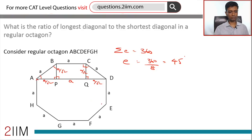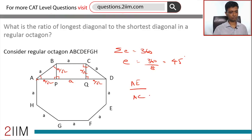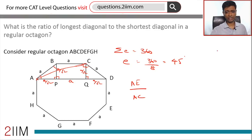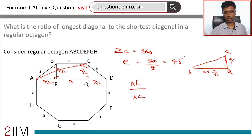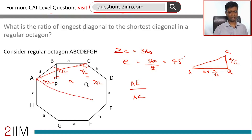The longest diagonal goes from A to E — the fourth vertex across — and the shortest diagonal is AC. To find AC, consider right triangle AQC. With CQ equal to a/√2 and AQ equal to a plus a/√2, we apply the Pythagorean theorem to get AC.